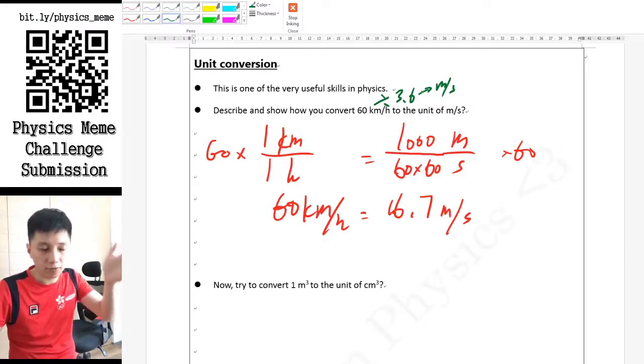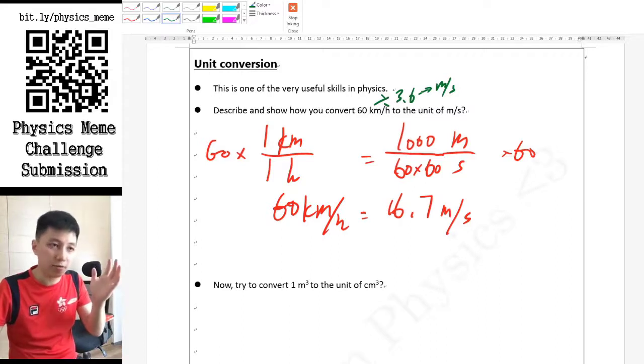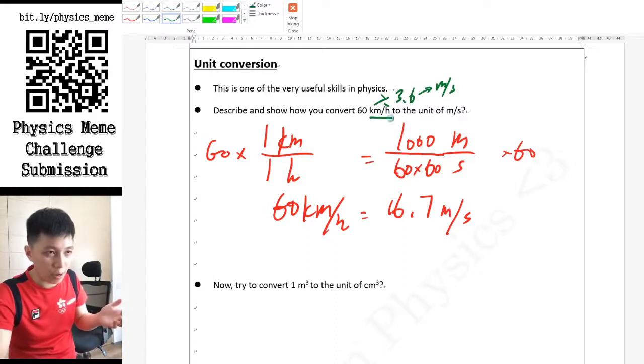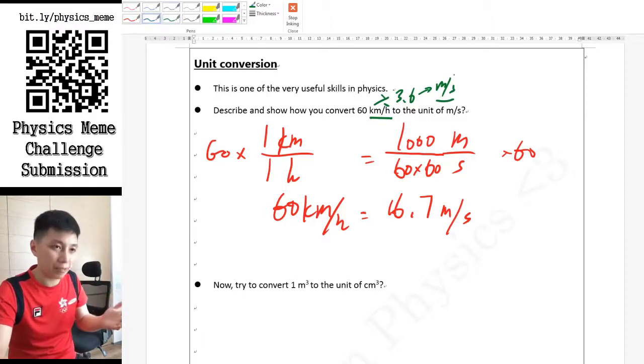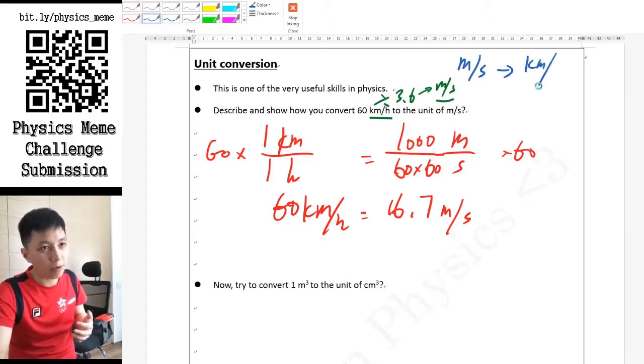I would rather remember or get used to the logical thinking, the logical reasoning. You've got to use logic to deduce how these two units are derived or converted. The second thing is when you convert from km per hour to meter per second, yes you would divide. However, if you do the other way around - meter per second to km per hour - what you have to do would be times 3.6.